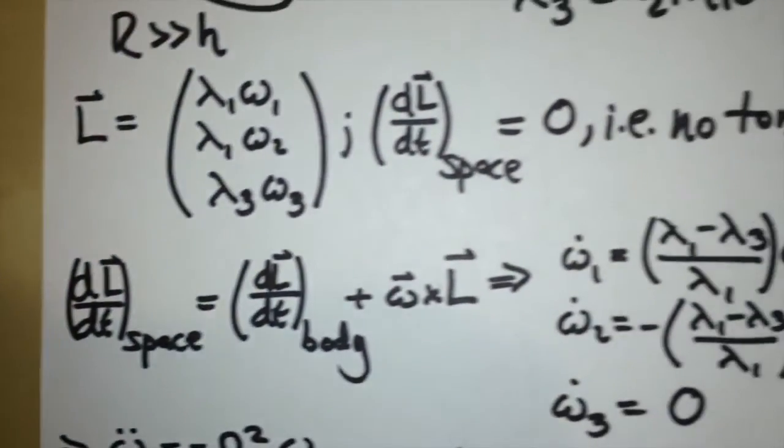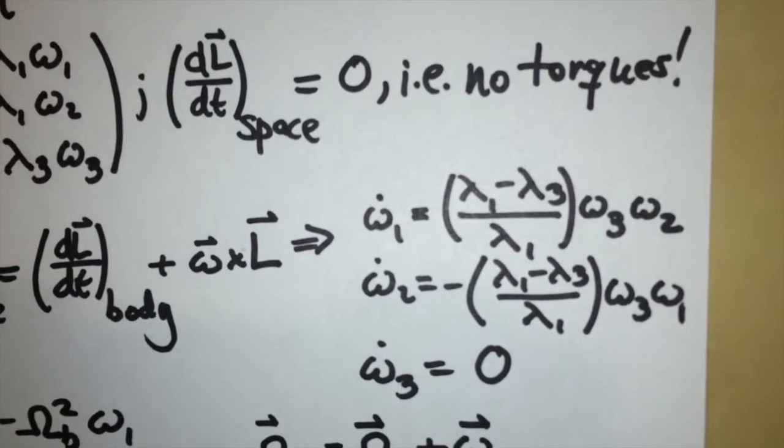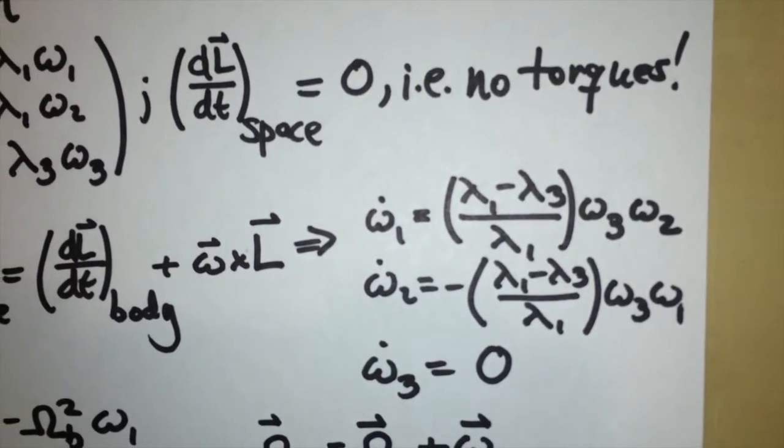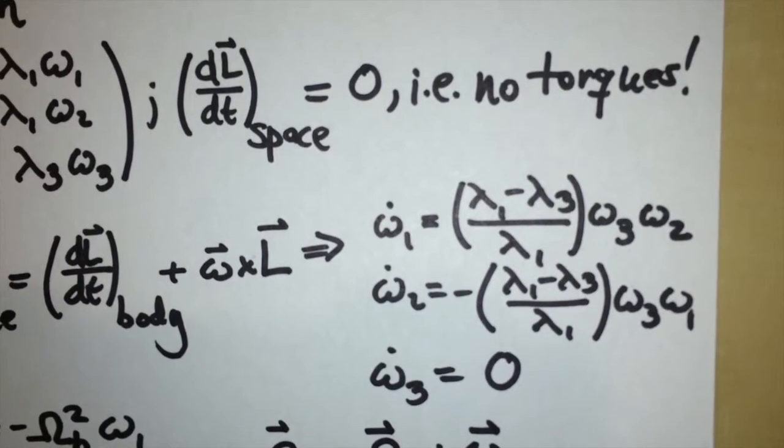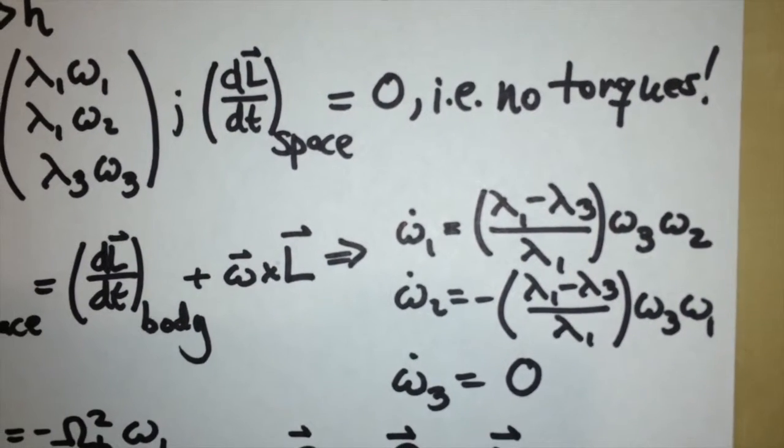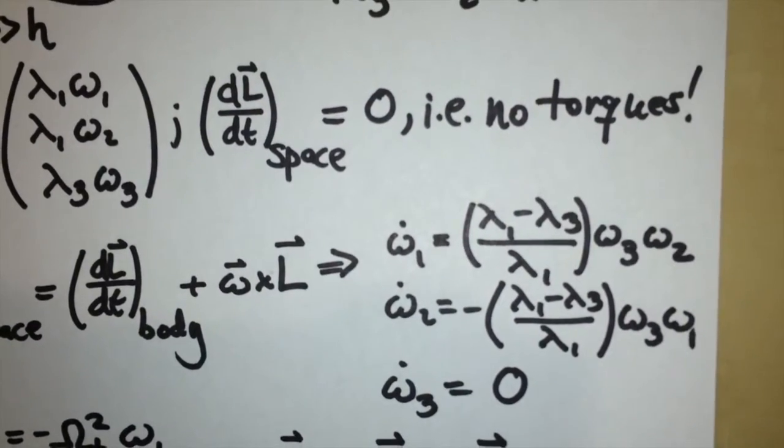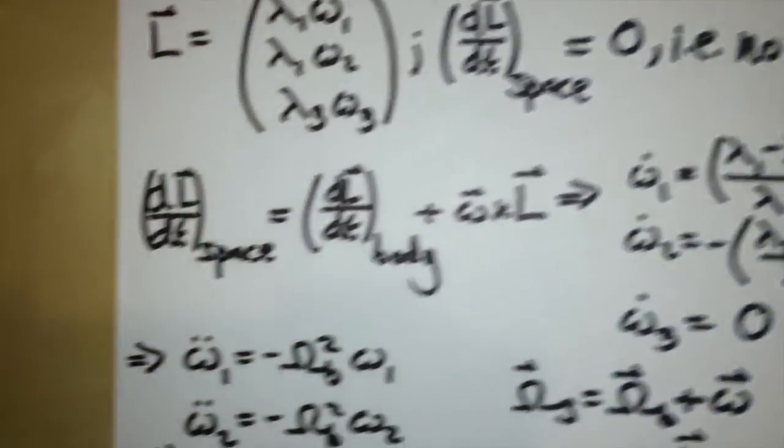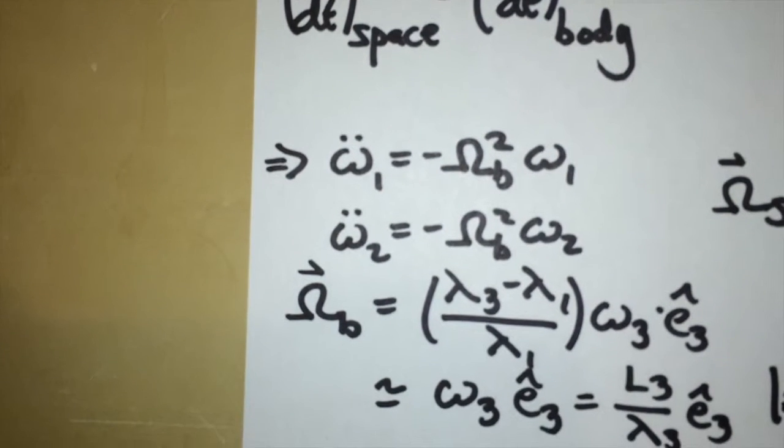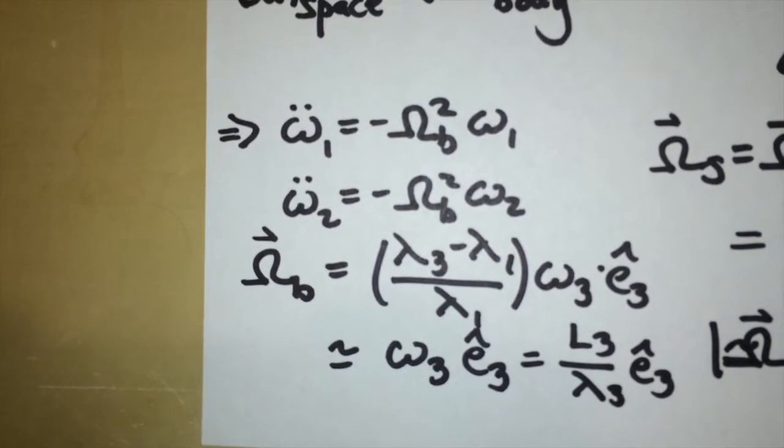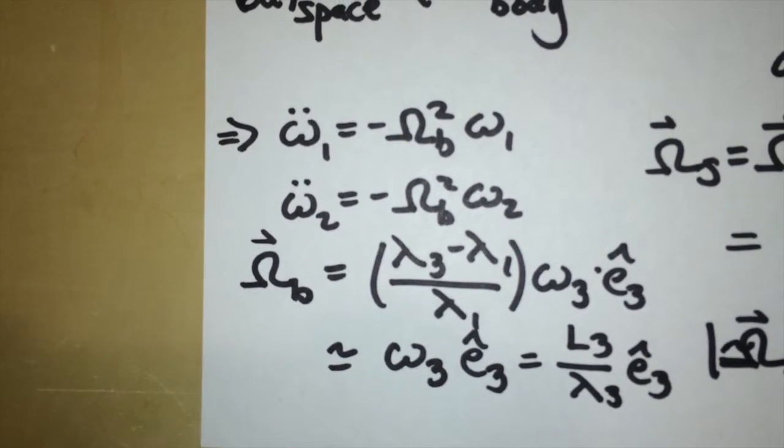And what we end up with are three equations expressing the time derivatives of the three components of the rotation vector in the body frame, so in the frame attached to the disk. The component along the largest moment is constant, while the other two are coupled in a way that when you take a second time derivative, you find that those other two components just oscillate with a frequency, what I call capital omega B.